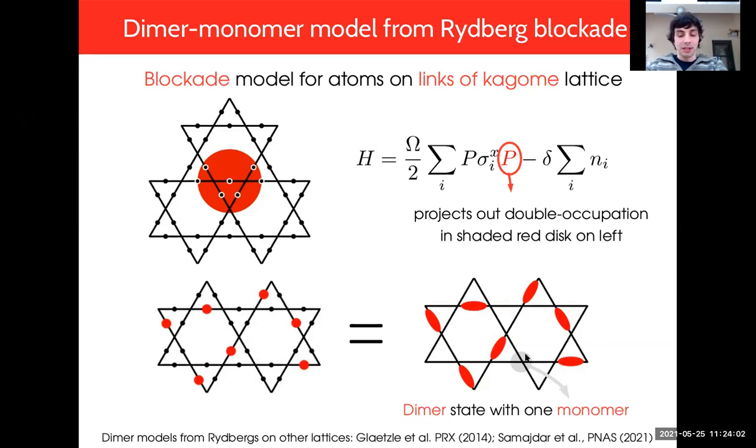This is one possible configuration that is consistent with this blockade. There's actually one caveat though. Indeed the blockade means that no two dimers can touch, but it doesn't a priori tell you that every vertex has to be touched by one dimer. We're not necessarily at maximal filling. We don't get a dimer model, we get a dimer-monomer model, but we can tune the density of monomers using the chemical potential term.